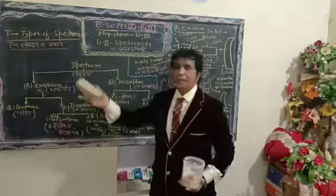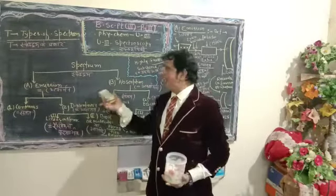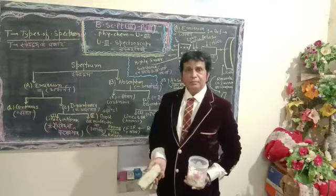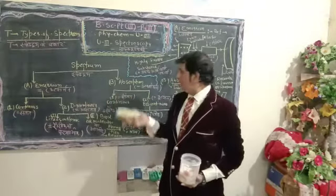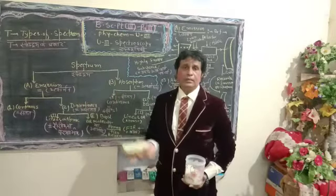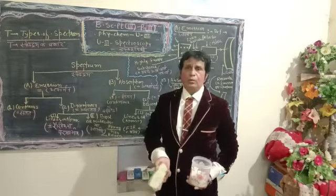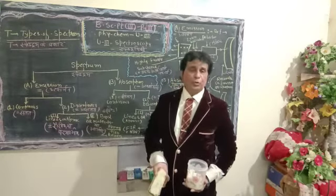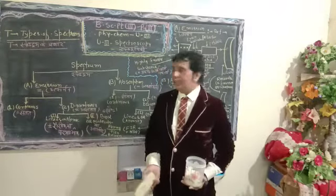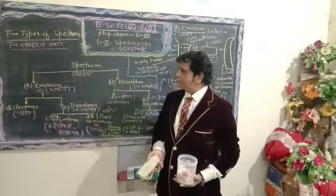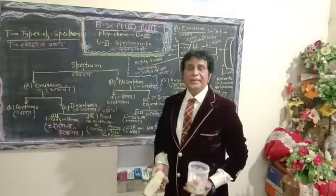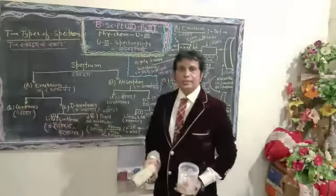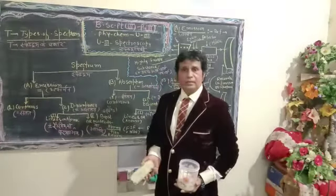The whole spectrum is further divided into two important subgroups. Subgroup A is mainly concerned with emission spectrum, and subgroup B is mainly concerned with absorption spectrum. I have drawn a complete chart on the blackboard to explain the classification of the spectrum easily. The whole spectrum is divided into two kinds: A is emission, and B is absorption.